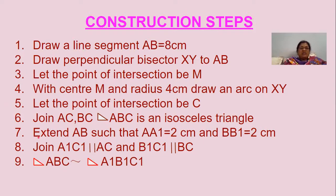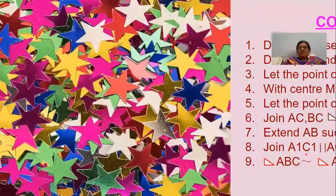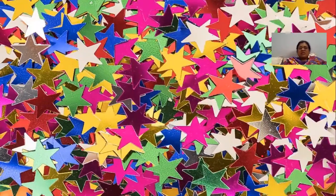For the similar isosceles triangle, step seven: extend AB such that AA' is two centimeters and BB' is two centimeters. When you add AA', AB, and BB', the total length is twelve centimeters. Join A'C' parallel to AC, and join B'C' parallel to BC. Finally, triangle A'B'C' is similar to triangle ABC and is one and a half times the original triangle. This completes the construction.